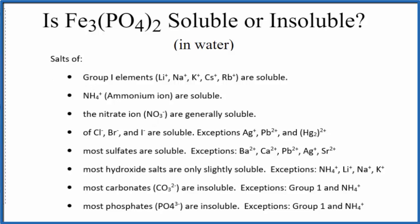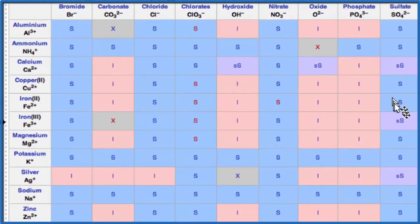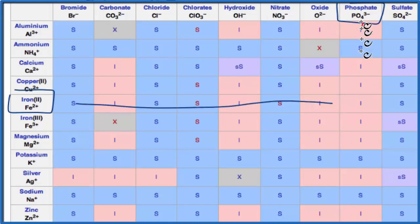We could also look at a solubility chart. Here's a chart, and we're looking for iron(II) with the positive ions, the cations. Here's iron(II), right here. And then phosphate, PO4³⁻. So we're going to go over and down, and that I right there means that iron(II) phosphate is going